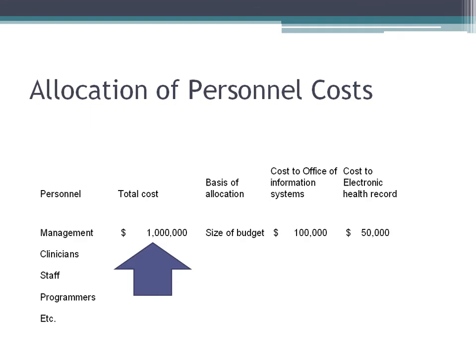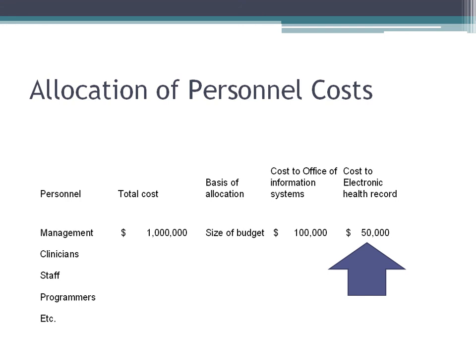An example can demonstrate how the cost of personnel is allocated. One category is management. Let us suppose that the total yearly cost of management in the entire organization is $1 million. If the office of information systems is 10% of the budget of the organization, then $100,000 of management cost is allocated to this office. If the electronic health record is 50% of the expenses within the office of information systems, then the portion of management cost allocated to the electronic health record is $50,000.